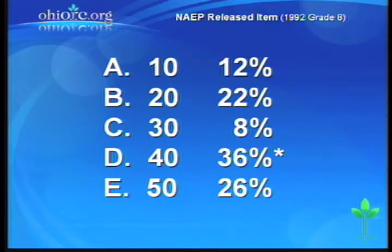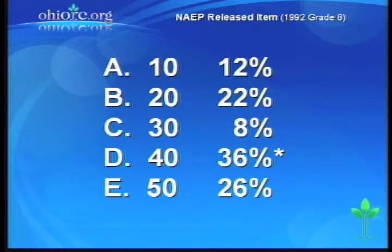Only 36% got this correct. Students seem to randomly set up a ratio or just started doing multiplication and division. For example, 12% got A (which was 10) — possibly by setting up the proportion in the order the numbers were given, or by multiplying 25 by 2 and dividing 500 by that. 22% chose B — possibly dividing 500 by 25. And 26% again chose an incorrect answer, likely just multiplying 25 by 2.